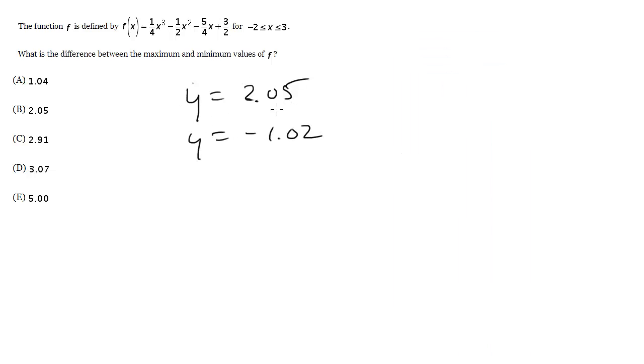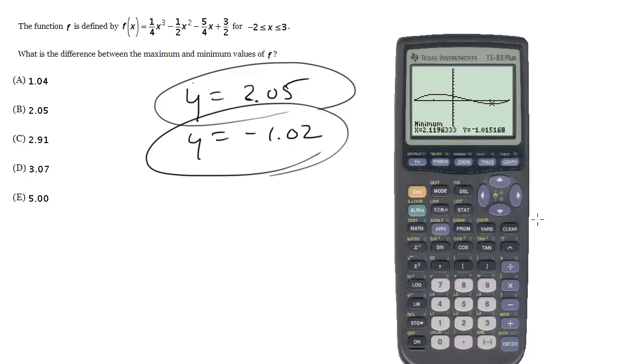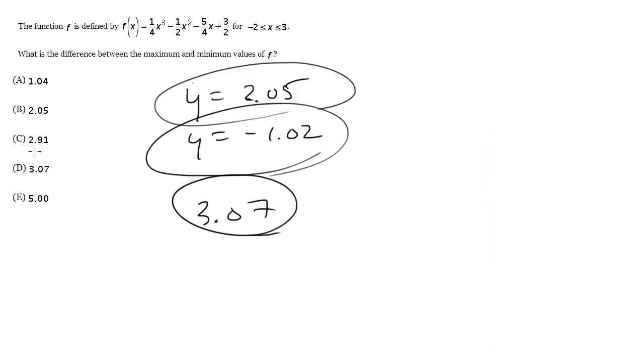So now I'll subtract the minimum and the maximum. So what's the difference between them? So I'll do 2.05 minus negative 1.02. That's just the same thing, it's plus 1.02. So we get 3.07 choice D.